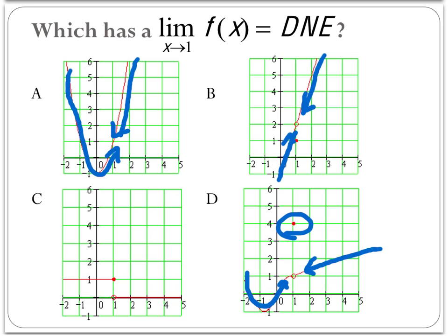Now if you take a look at C, you can see that as the graph traces from the left side and the right side, the graphs do not match up. Therefore, the limit does not exist. So the answer here would be C.